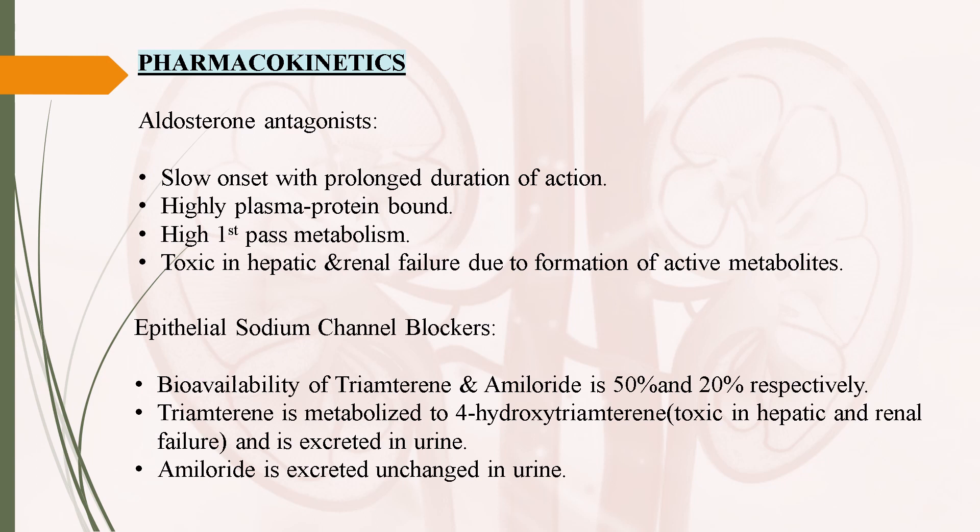Coming to pharmacokinetics of epithelial sodium channel blockers: bioavailability of triamterene and amiloride is 50% and 20% respectively. Triamterene is metabolized to 4-hydroxy-triamterene, which is an active metabolite, and so is toxic in hepatic and renal failure. It is excreted in urine. Amiloride is excreted unchanged in urine.